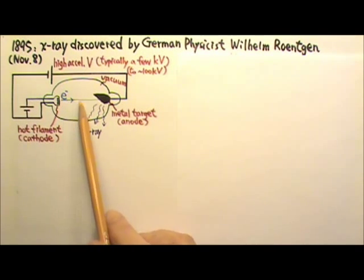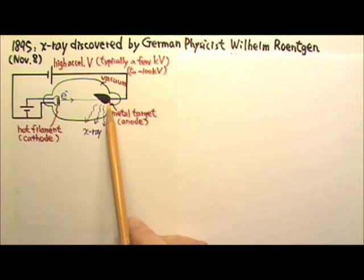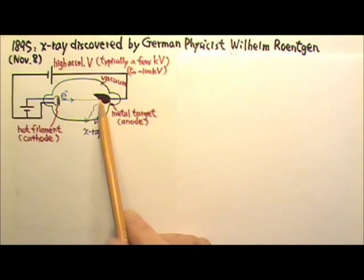When the electrons strike this metal target anode, they lose at least some of their kinetic energy. Because of the deceleration, they give off EM radiation X-ray photons.